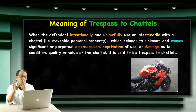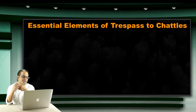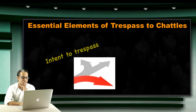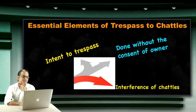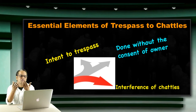Now let us check out what are the essential elements of trespass to chattels. First, intent to trespass. Second, done without the consent of the owner. Third, interference with the chattel — interference means trespass, that you did something wrongly to another's property.